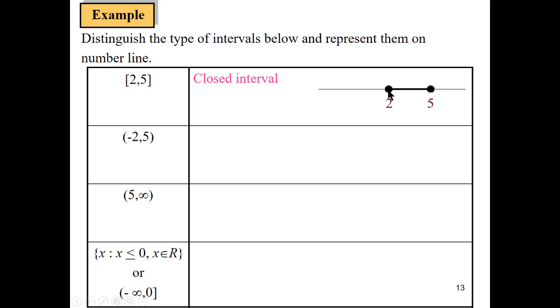We're going to draw a black dot, that is called a dense circle, on 2 until 5 because both are included.